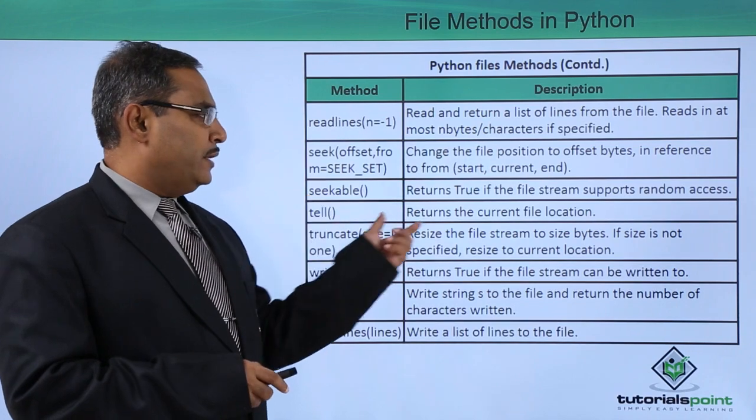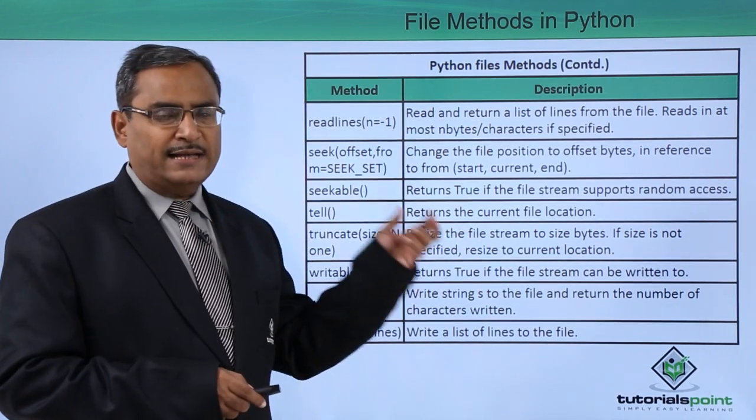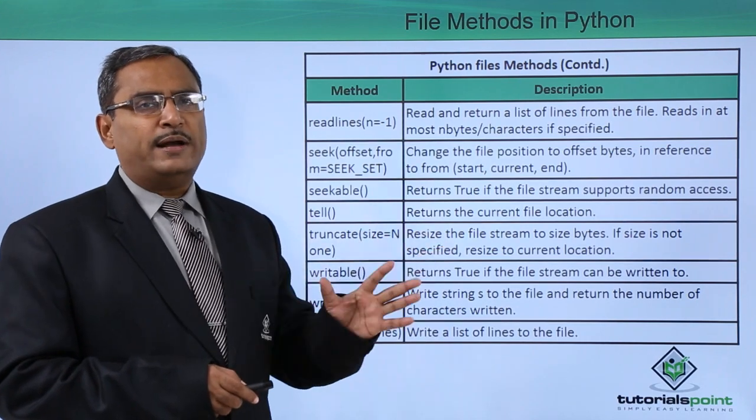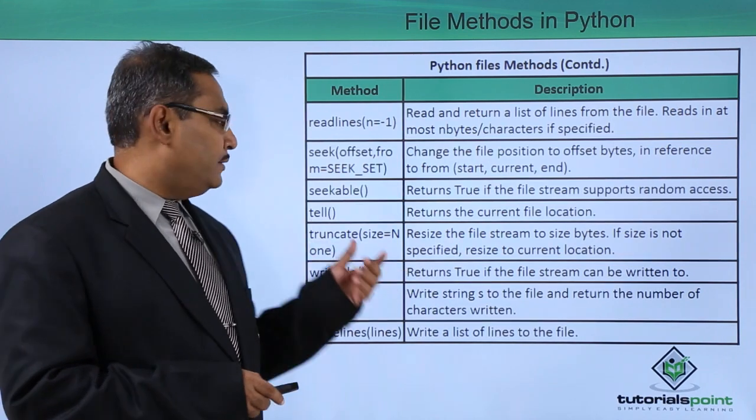Next one is seekable - returns true if the file stream supports random access. If we can go for the random accessing of the file content then it will return the output true. It returns boolean.